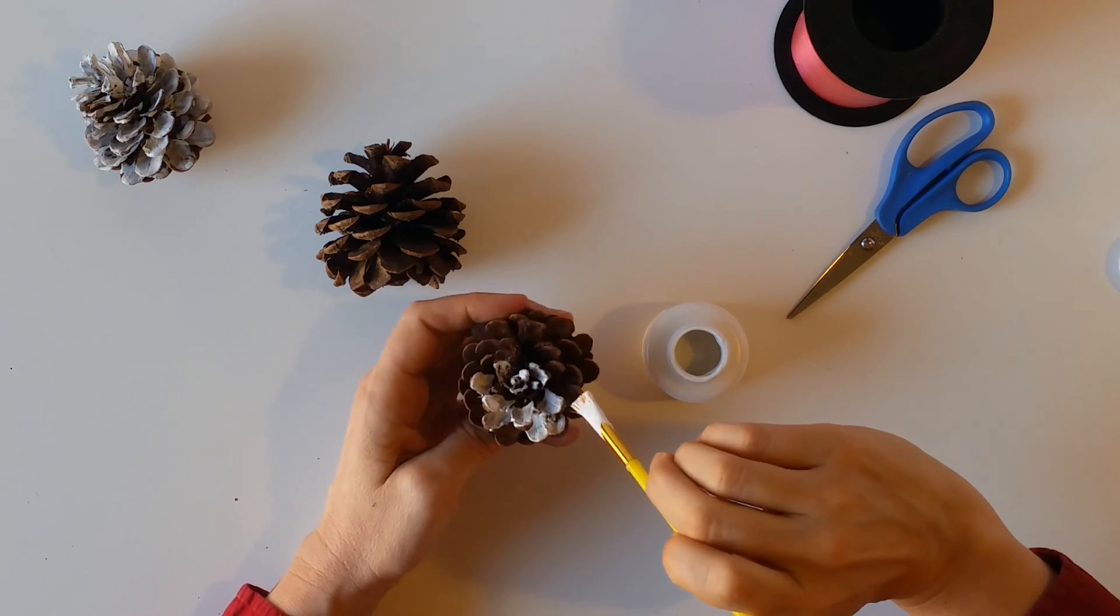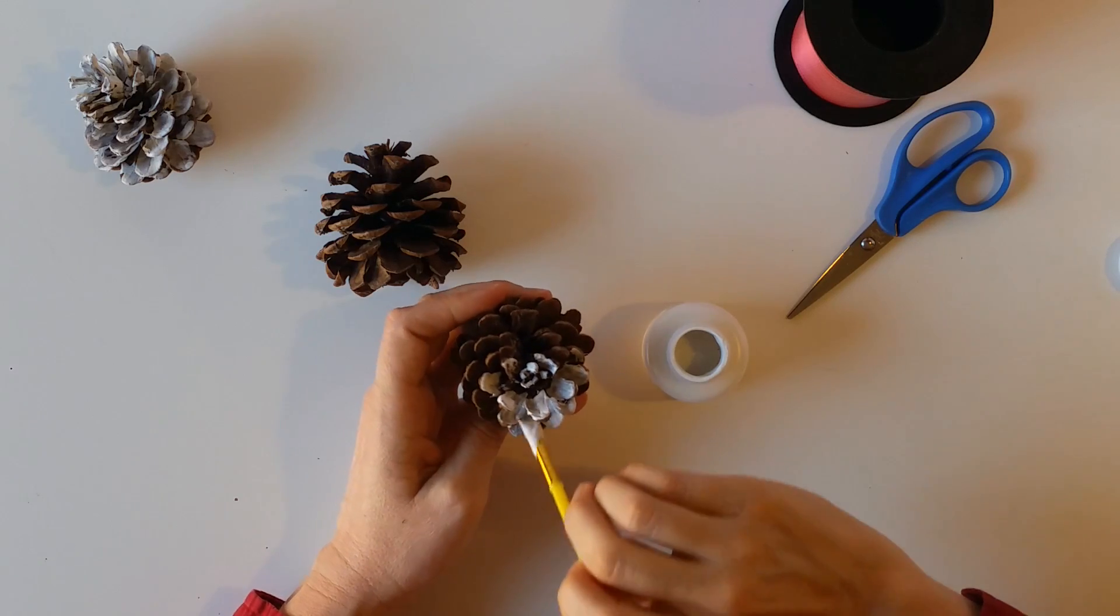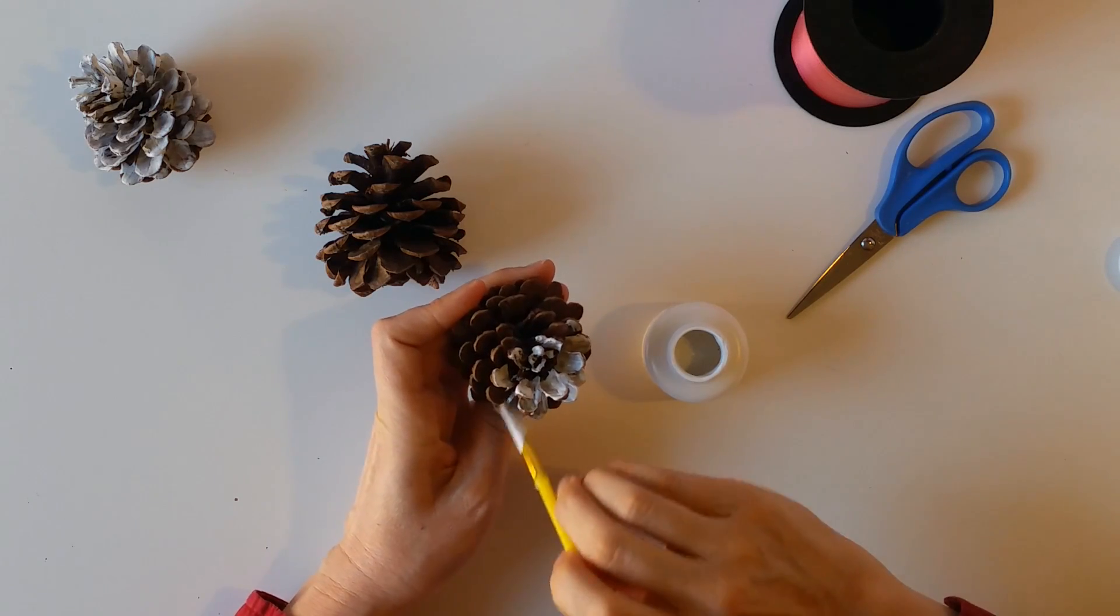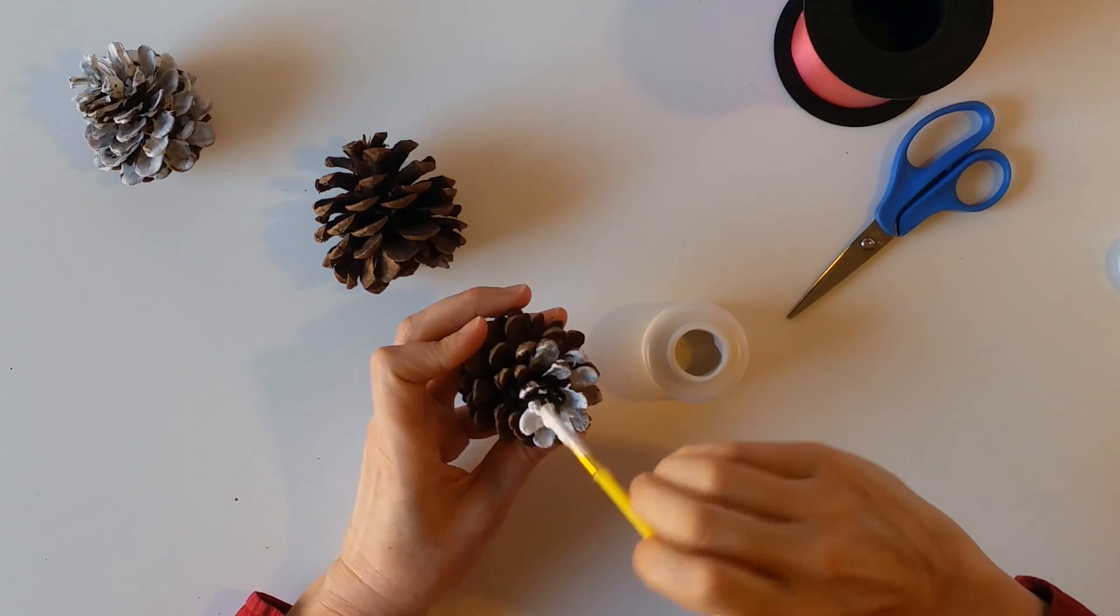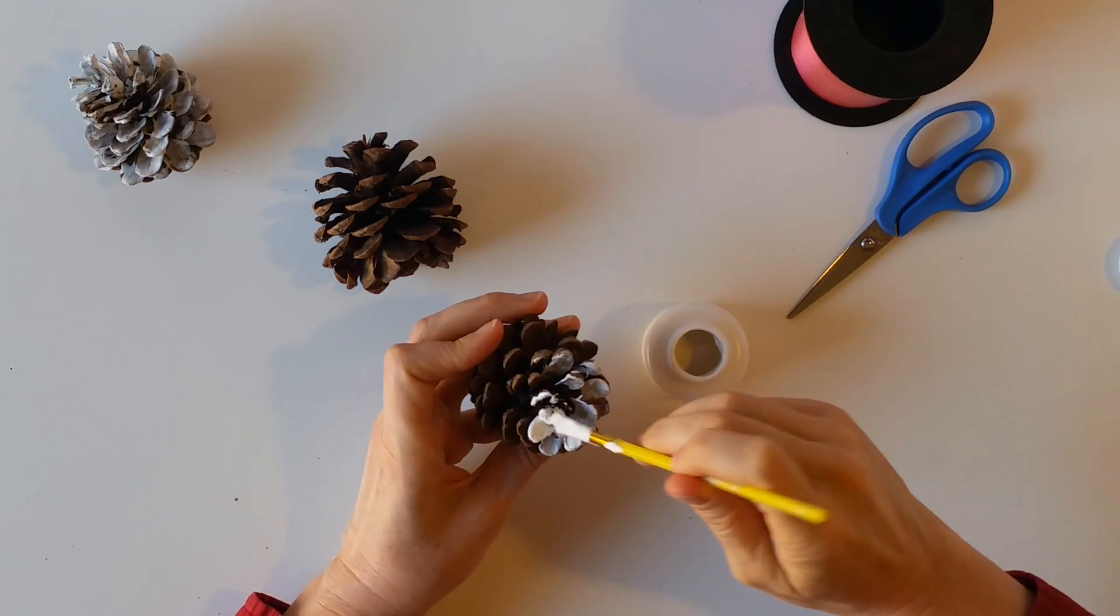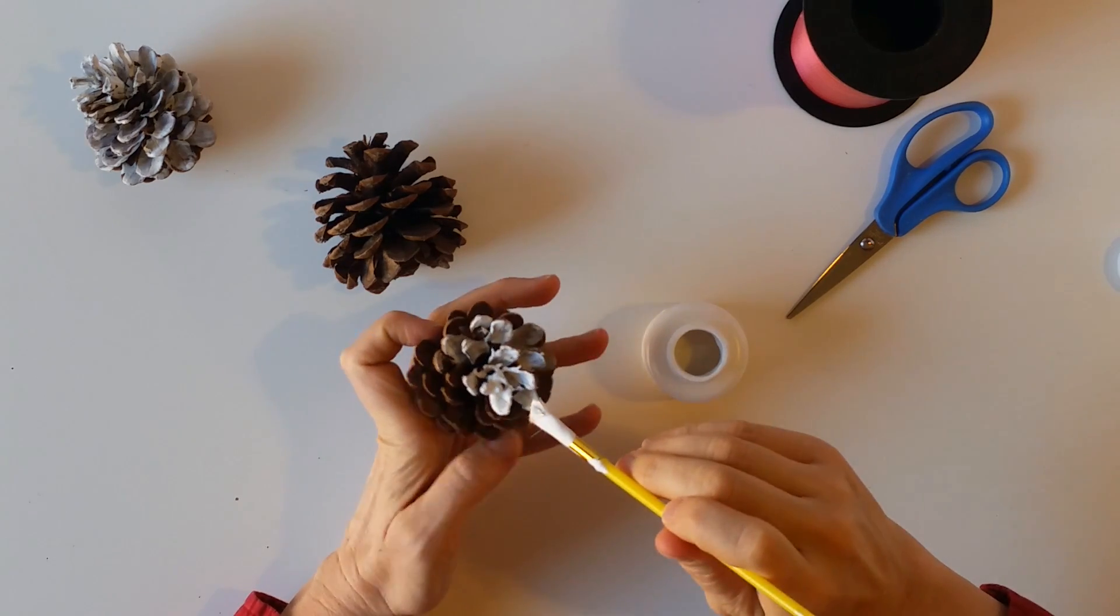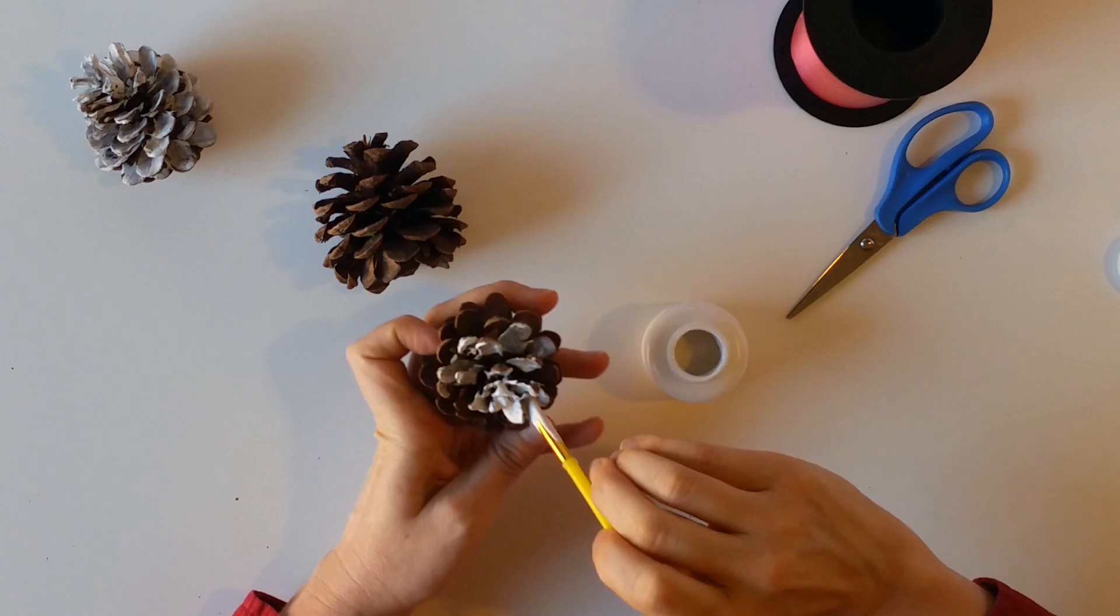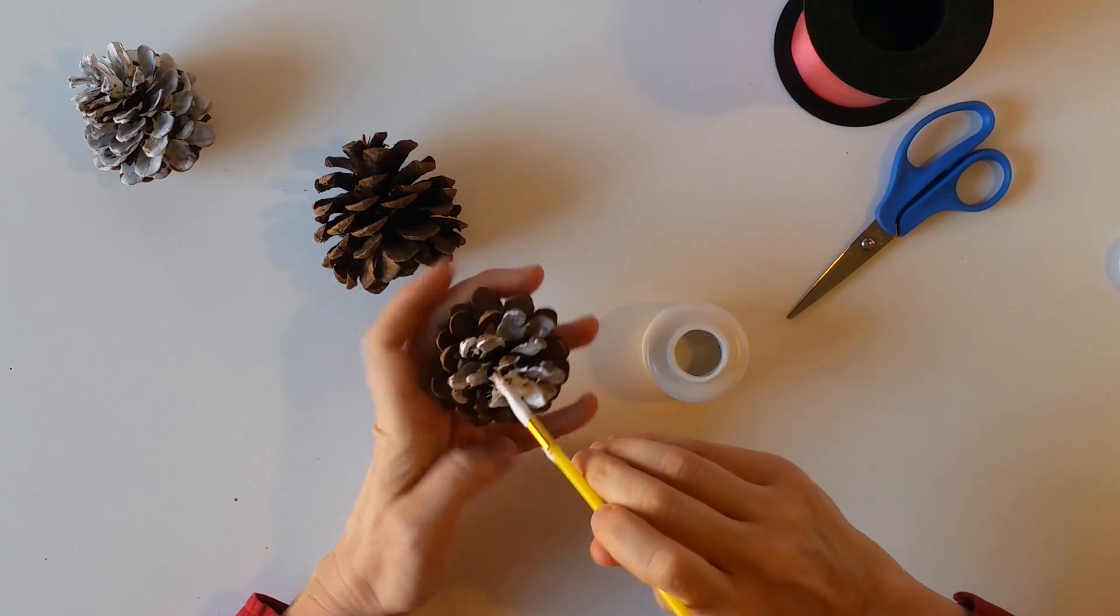So you want to make it kind of thick so it looks like snow is sitting on the top of the pine cone. And just go around. You're going to start at the top and work down to the bottom because this way you don't get your hands all messy with paint. You could put down some newspaper but this is washable paint and it's actually not too messy.